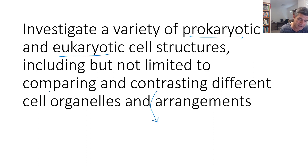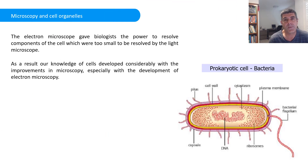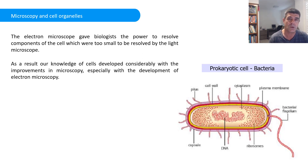One thing to note is that both of these terms have been used, which means we're going to be looking at similarities as well as differences in cell organelles and arrangements — not just between prokaryotic and eukaryotic cells, but also between different members of the eukaryotic group such as plants and animals. In previous videos, we looked at the development of the electron microscope, which uses a beam of electrons rather than light to produce images, giving us much higher resolution and magnification. This allowed us to see very small structures inside cells and develop our understanding of the differences between prokaryotic and eukaryotic cells.